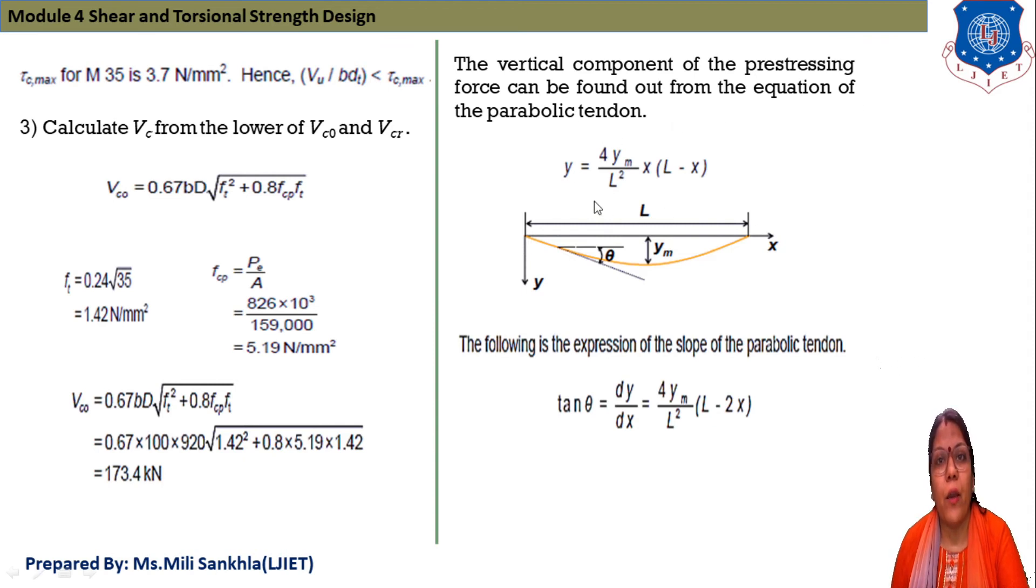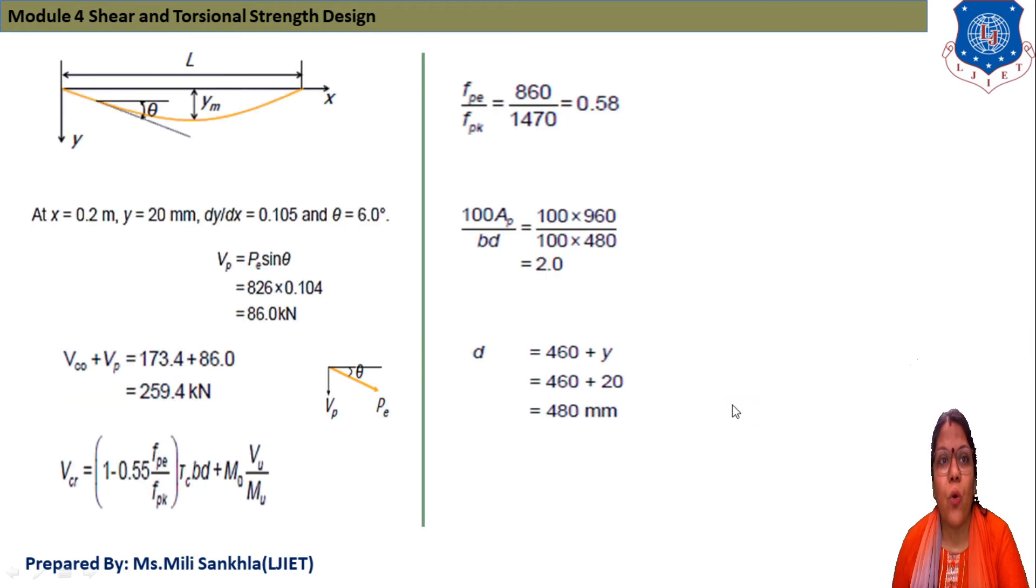ft equals 0.24√fck, fck is 35 given, answer of ft equals 1.42. fcp equals stress, that is load divided by area. Prestressing force is 826 × 10³ divided by total area of I-girder, we get fcp 5.19 N/mm². Now we find Vco. 0.67b·d then under root of ft² + 0.8fcp·ft. After putting all values we get Vco that is 173.4 kN.